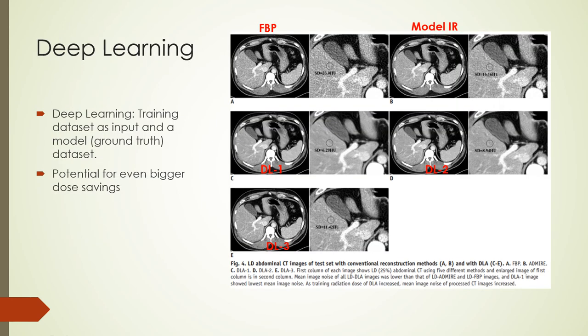The latest approach to image reconstruction is the deep learning method. Deep learning-based methods use a training data set as inputs and a model data set of expected image quality. The algorithm learns the correct image quality by iterating the training data against the ground truth until the desired image is achieved. The best image quality from deep learning is not necessarily the one with the lowest noise, but one that has low noise and preserves spatial resolution information.